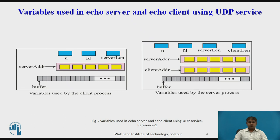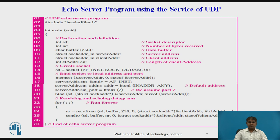Here are the variables used in the client process and the variables used in the server process. Looking at the echo server program: line 14 creates a socket, lines 16 to 19 create the local socket address, and the remote socket address will be created in line 24. Line 20 binds the socket to the local socket address. Lines 22 to 26 receive and send datagrams — it can be from many clients. When the server receives a datagram from a client, the client socket address and the length of the socket address are returned to the server.